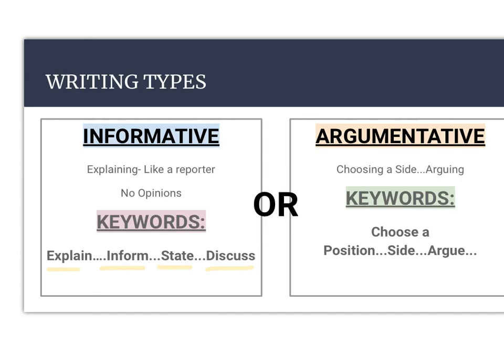Then we have argumentative. Argumentative writing is what they called opinion writing in elementary school, but we're in middle school now — we're kicking it up a notch. It's not about how you feel or what you think. It's about what you can prove after choosing a side. Argumentative means you choose a side, for or against, and then you argue so that everybody else would join your side.